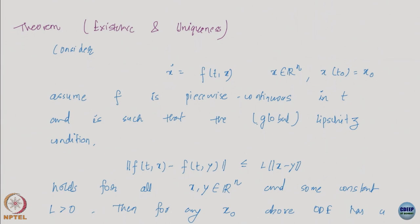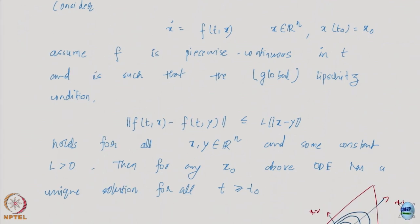We are simply going to assume a pretty nice smoothness-like assumption called the global Lipschitz condition, which essentially says the function is piecewise continuous in time, and on top of that satisfies a global Lipschitz condition — something like differentiability but a little more than that. This is more or less enough for solutions to exist and be unique for all times greater than the initial time.